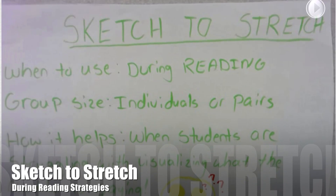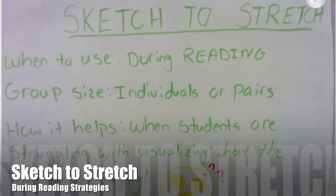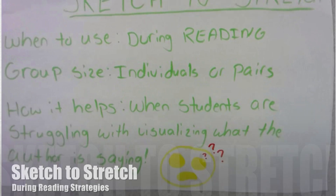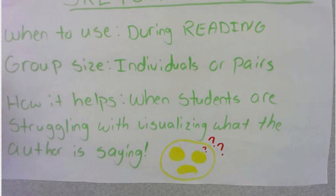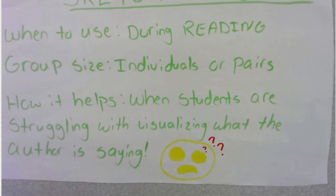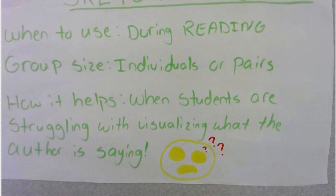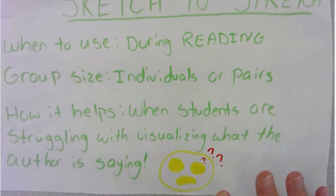Today we're going to learn about Sketch to Stretch. This is a literacy strategy to use during reading. Group size can be individual or pairs. It helps when students are struggling with visualizing what the author is saying — this is a really good strategy to use. It helps them get unconfused.